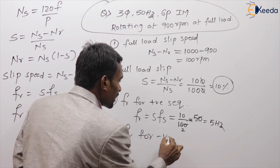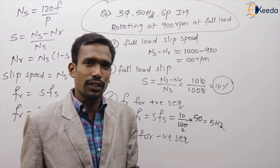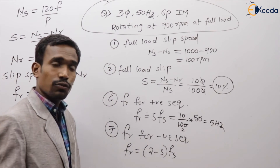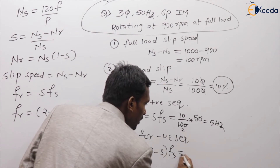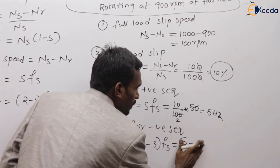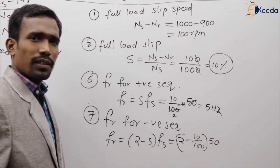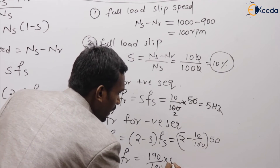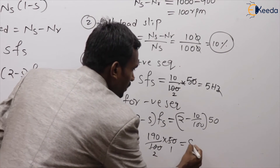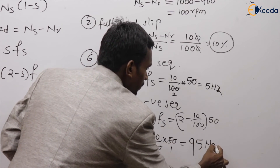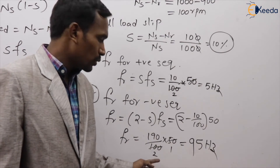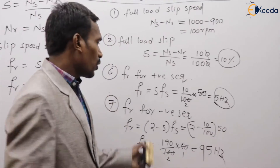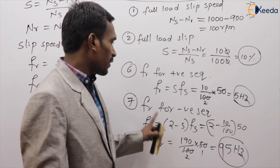Seventh question: rotor frequency for negative sequence. Fr equals (2 minus S) into Fs. S is 10%, so 2 minus 0.1 equals 1.9. Fr equals (200 minus 10) by 100 into 50, which is 190 by 100 into 50 equals 95 Hz. So the rotor frequency for positive sequence is 5 Hz and for negative sequence is 95 Hz.